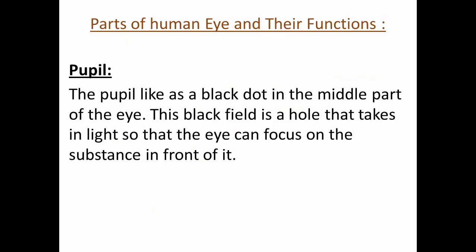Pupil. The pupil is a black dot in the middle part of the eye. This black area is a hole that takes in light so that the eye can focus on the objects in front of it.